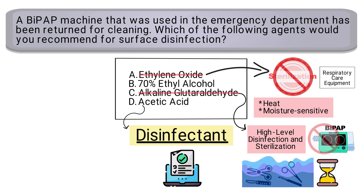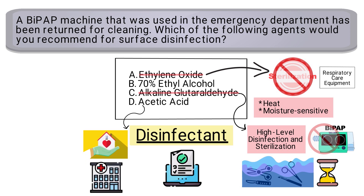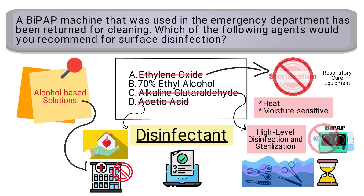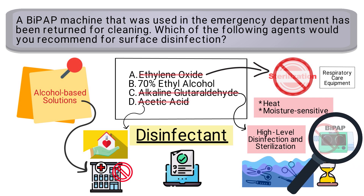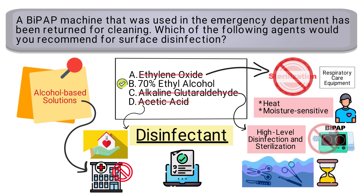Acetic acid is a disinfectant, which means that we can rule out answer choice D. Now remember, alcohol-based solutions are typically used to disinfect surfaces in the hospital setting. Therefore, that is what's recommended to clean the surface of a BiPAP machine, which should be performed before use on a new patient. That means the correct answer is B — 70% ethyl alcohol.